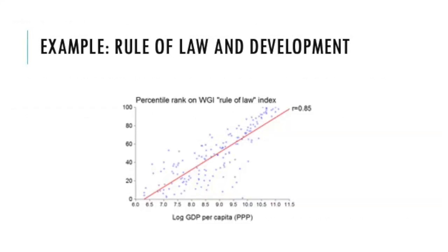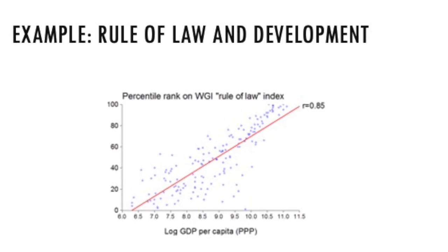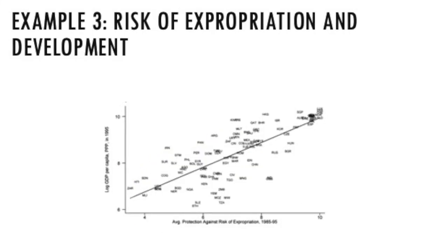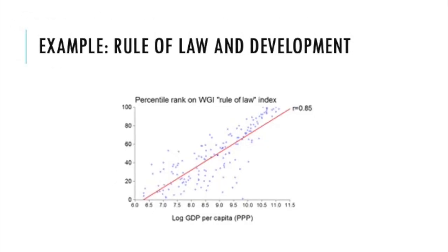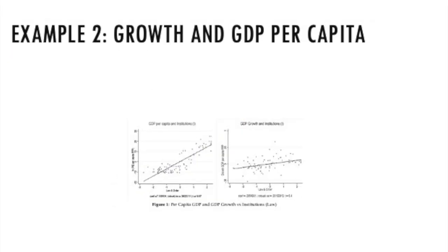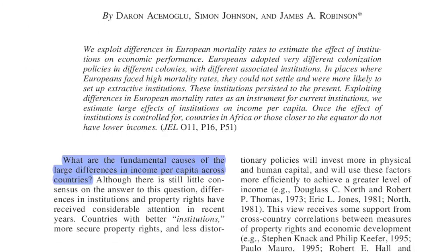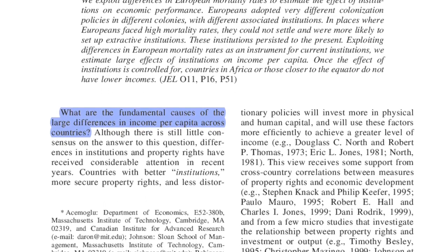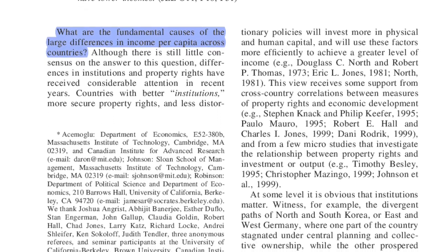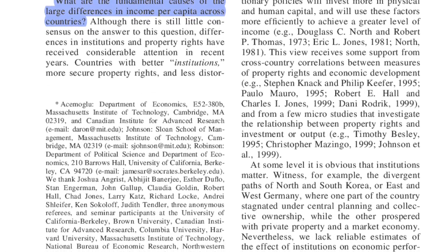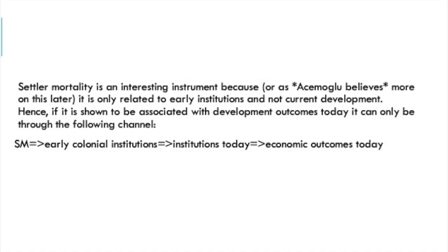So let's return to Acemoglu's paper. As an institutionalist, he wants to demonstrate that the fundamental channel of economic divergence is institutions. To establish a causal link between current institutions and current economic development, he needs an instrumental variable with the aforementioned desired properties. The IV should be directly connected to current institutions and only indirectly to current economic development via its effect on institutions. In Acemoglu's paper, this instrumental variable is early colonial settler mortality.